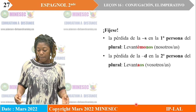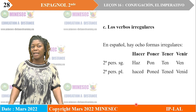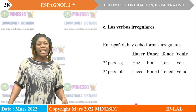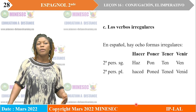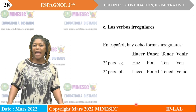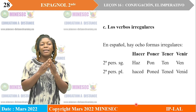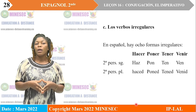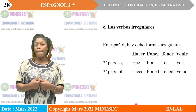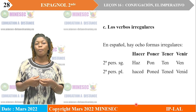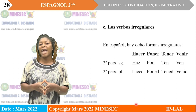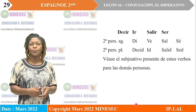Vamos a pasar a los verbos irregulares. En español hay ocho formas irregulares: hacer, poner, tener, venir. Colocamos las segundas personas del singular y del plural: hacer - haz tú; poner - pon tú, poned vosotros; tener - ten tú, tened vosotros; venir - ven tú, venid vosotros.